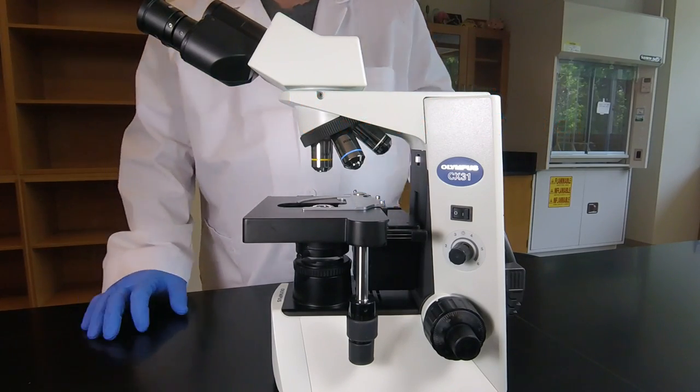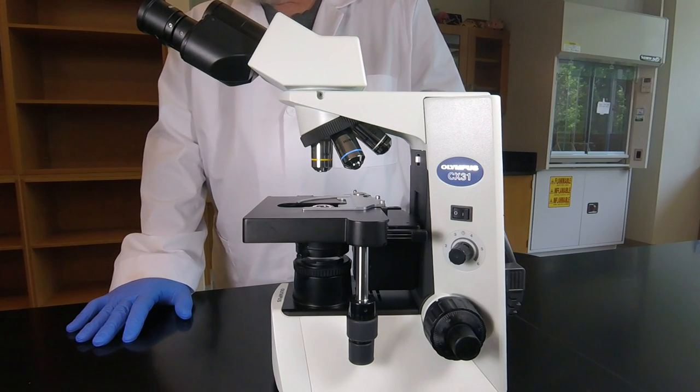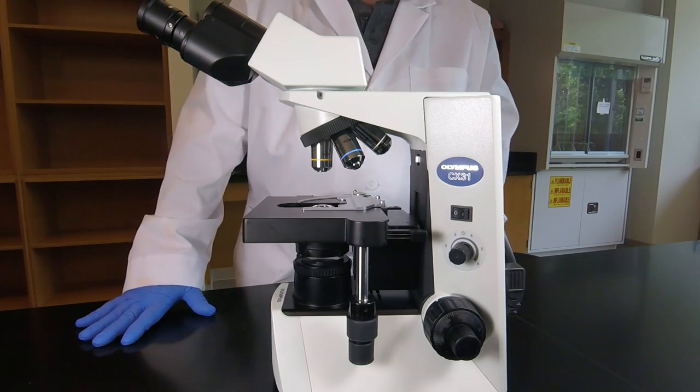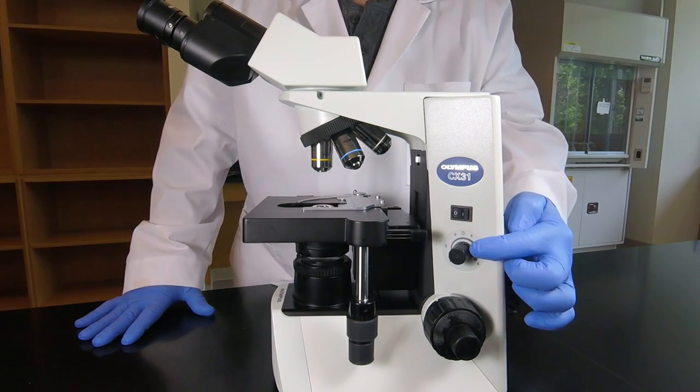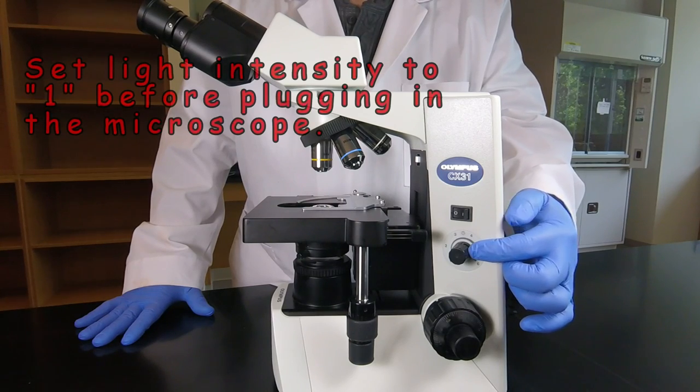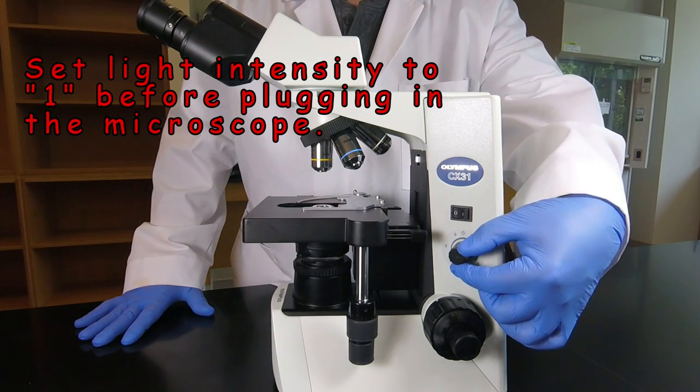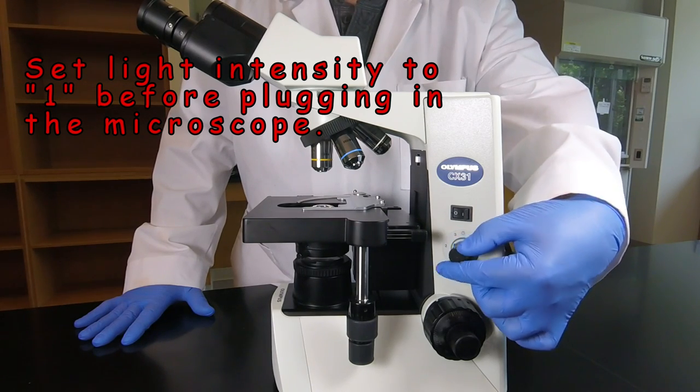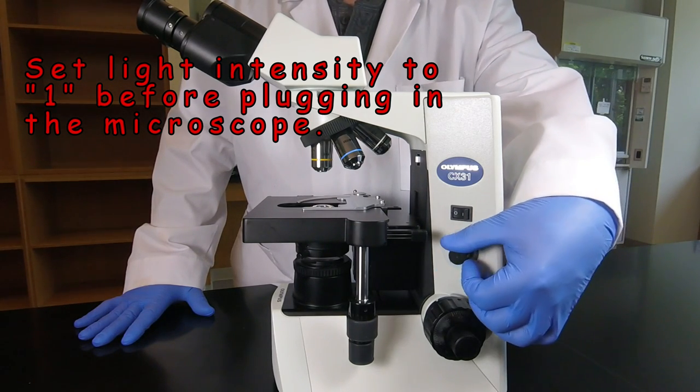Now, once your microscope is in position, we want to be able to plug it in, but there's a preliminary step we do before we plug it in. First of all, we want to check the light intensity control knob, which we see right here, and make sure that is set on one, as low as it'll go. If it's not set at one, then put it back to one.